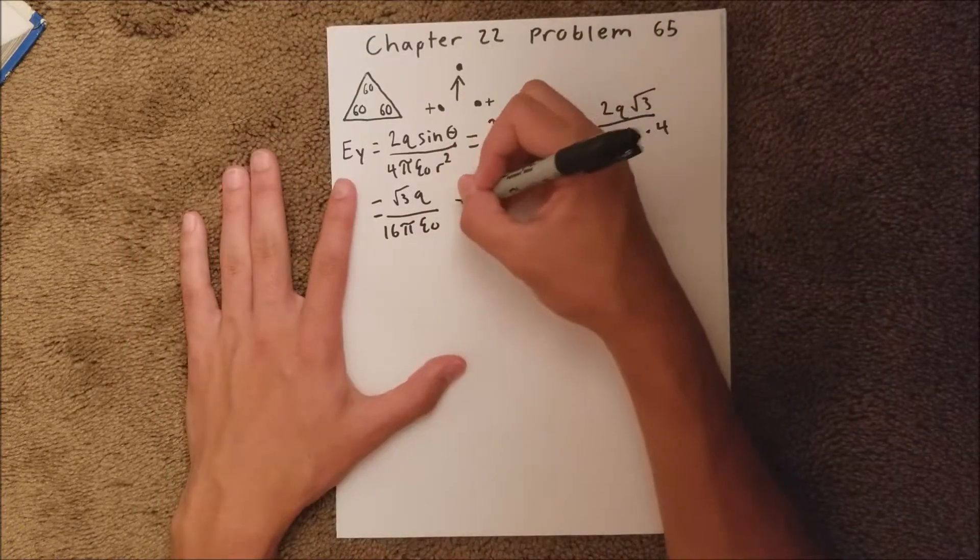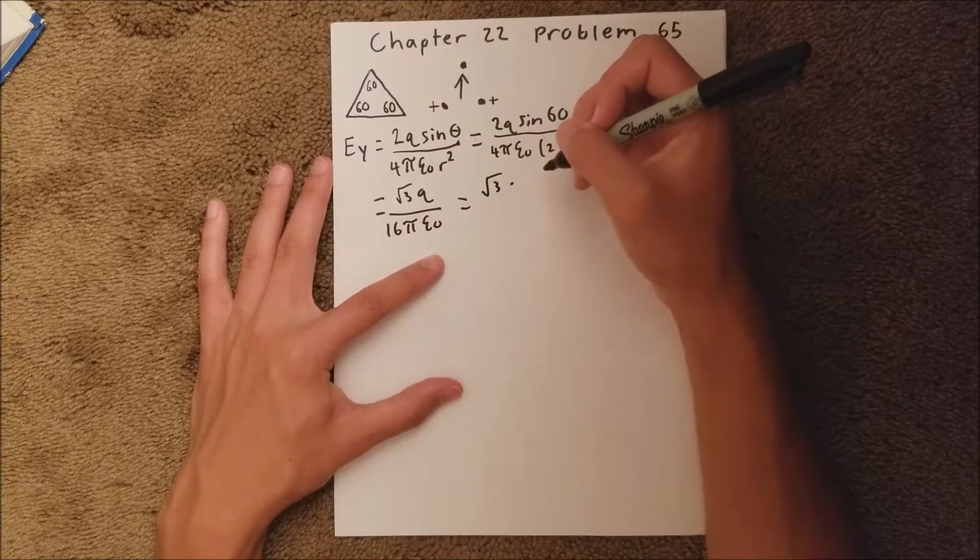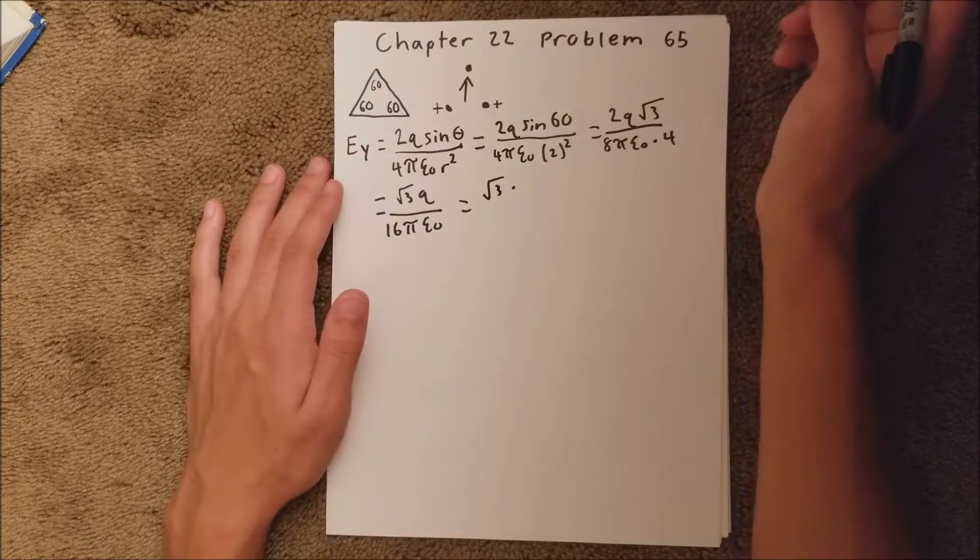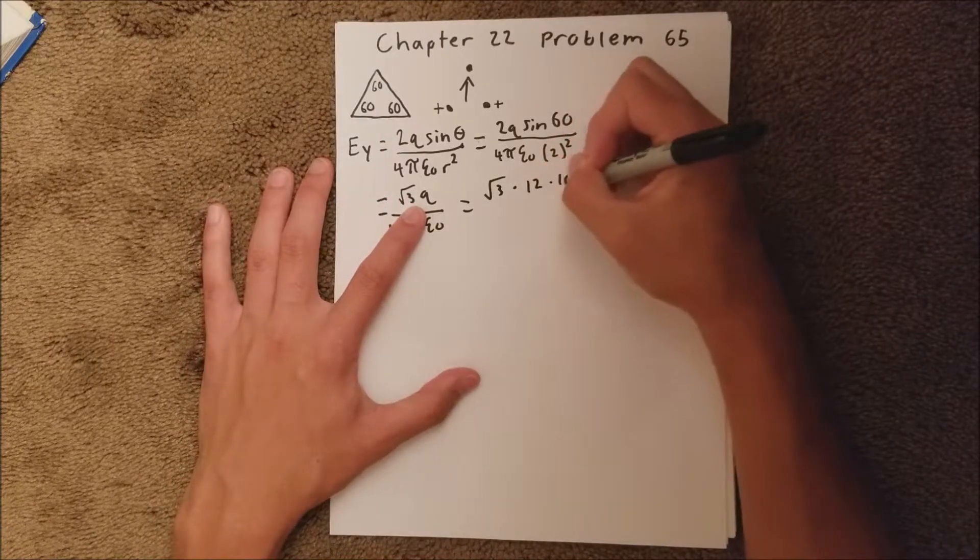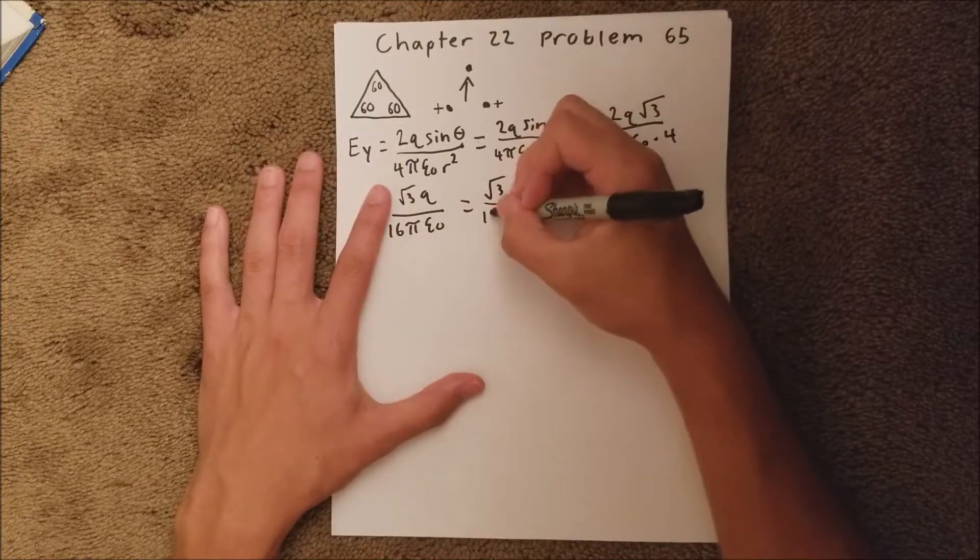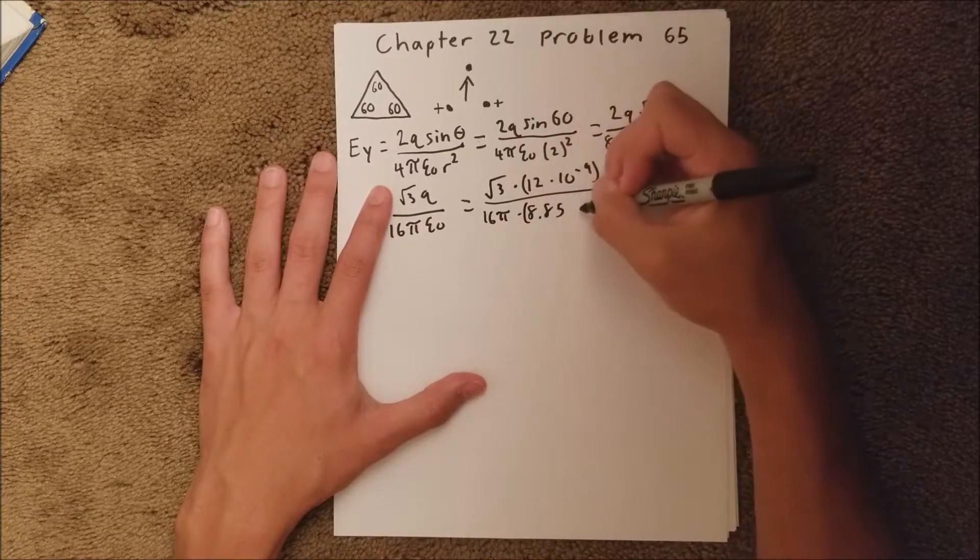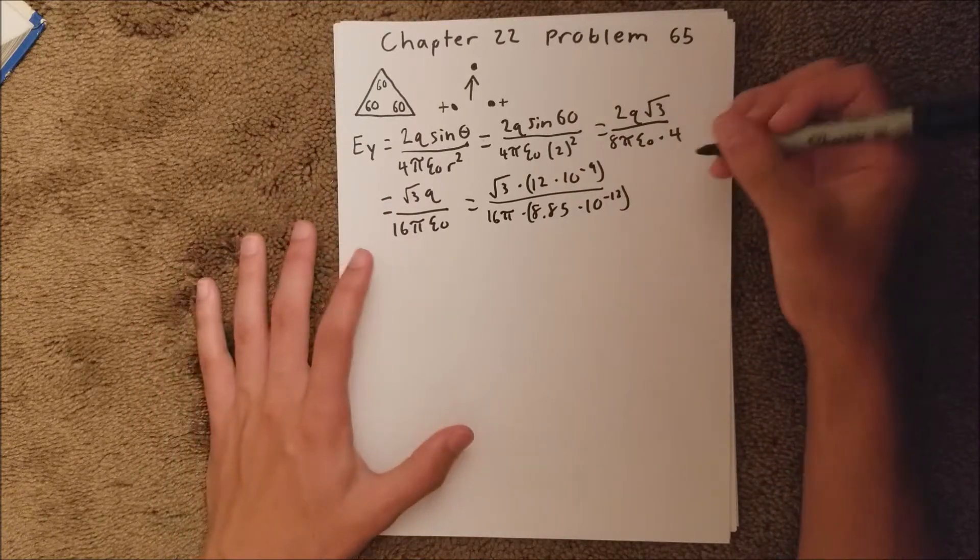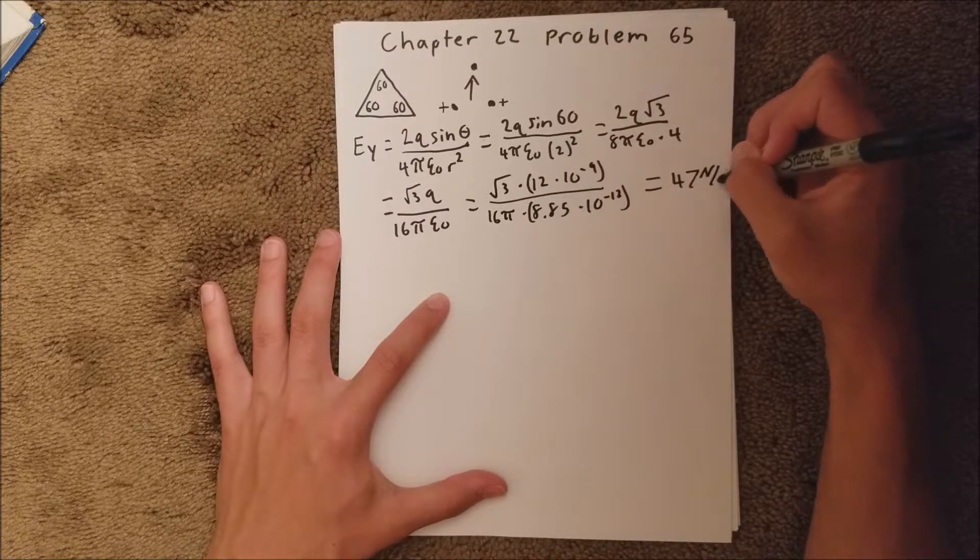And that is root 3 times, we are told that the charge is 12 nanocoulombs, and whenever you see nano, that means times 10 to the negative 9th. So that's going to be 12 times 10 to the negative 9th, and that's over 16 pi times 8.85 times 10 to the negative 12th. And when you plug that into your calculator, you should get 47 newtons per coulomb.